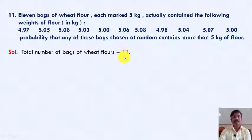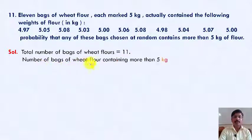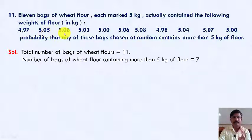Number of bags of wheat flour containing more than 5 kg of flour. The bag should contain wheat flour more than 5 kg. That means first one we can't take because it is less than 5 kg. 5.05, yes. 1, 2, 3, 4, 5, 6, and this one 7.